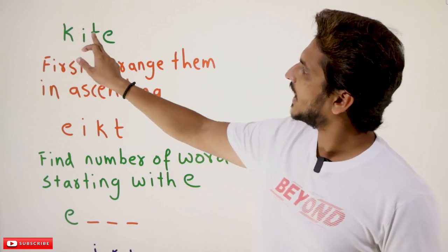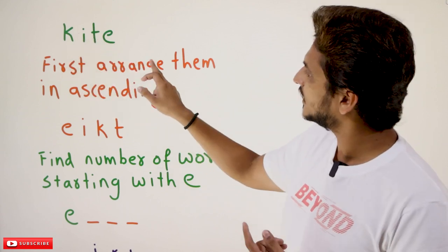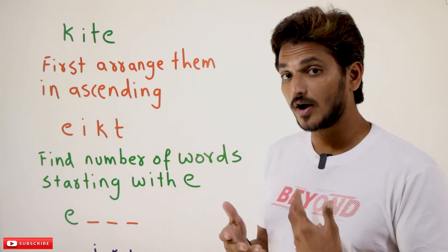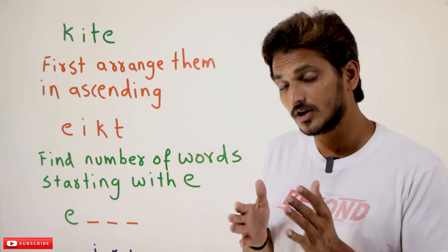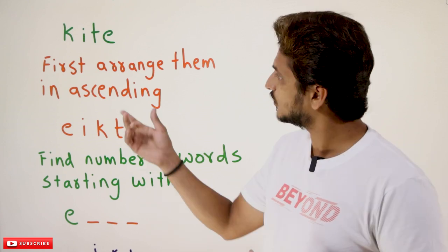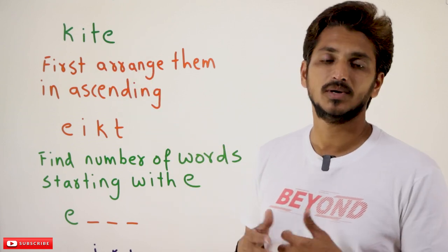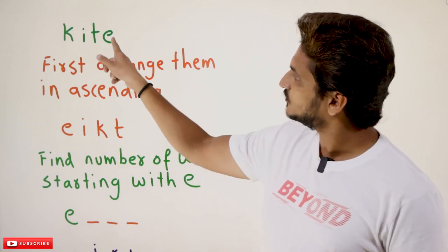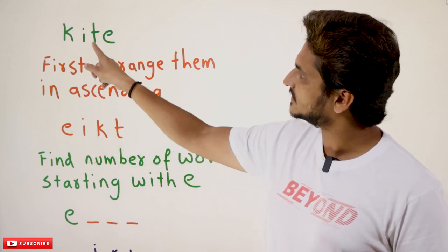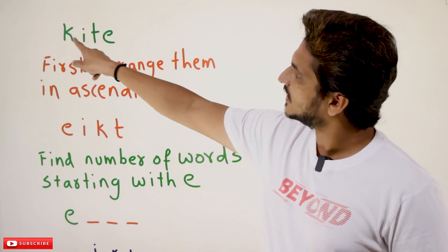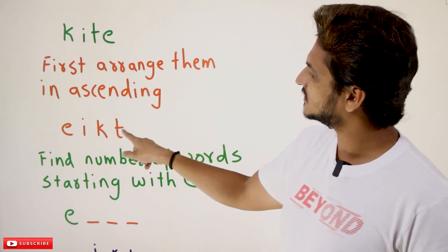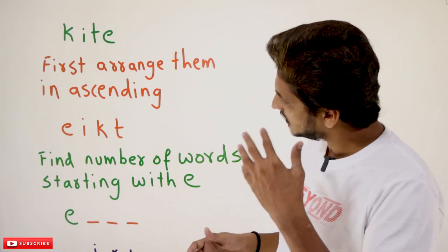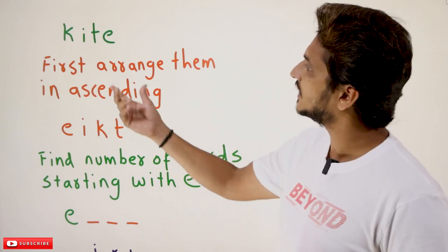First, take the letters k, i, t, e and arrange them in ascending order. In order to find the word rank according to dictionary order, we arrange them in ascending order. The first character in dictionary order is E, the second is I, the third is K, and the last is T. These are the characters present in this word.